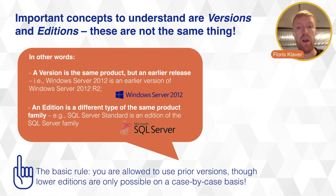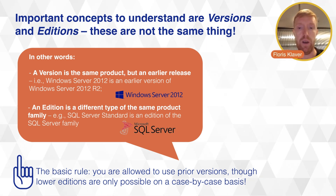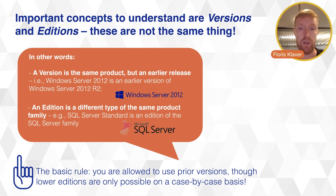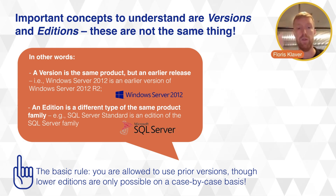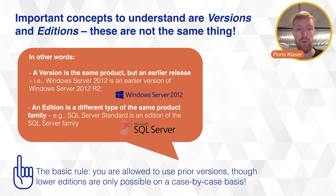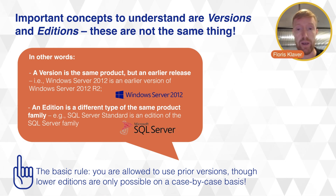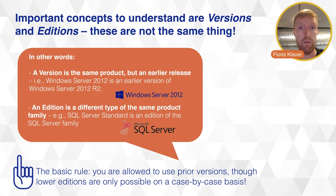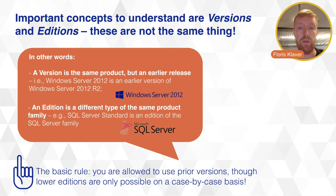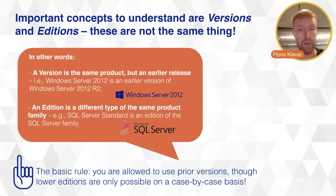The basic rule is that you are allowed to use prior versions, especially when you sign up for Software Assurance, but lower editions are only possible to use on a case-by-case basis. For instance, one of the main things back in the day was the difference between Office Pro Plus and Office Standard — if you bought Office Pro Plus, you are not allowed to use Office Standard. Whereas with a product like SQL Server, you can buy Enterprise and you're allowed to use Standard. So there are different rules for this, and you should be wary of what you buy versus what you implement and start using.